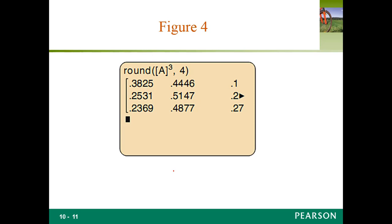You can also compute this on a calculator by cubing the matrix A — your P matrix — and using the rounding function to round all values to four decimal places. So you enter the P matrix, cube it, then round. This keeps everything simple and accurate.